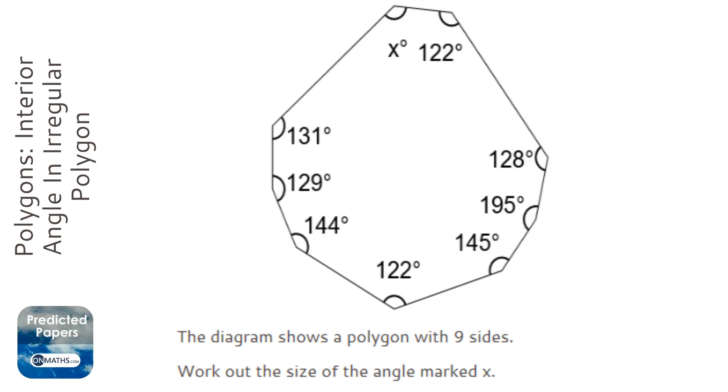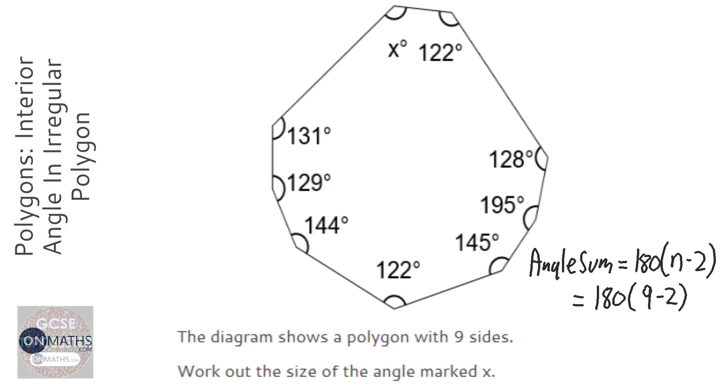So the formula for the angle sum in a polygon is 180 times n minus 2. So that's 180 times the amount of sides, which is 9, take away 2. So that's going to be 7 times 180, which is 1260.